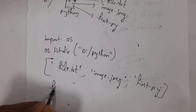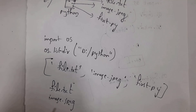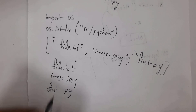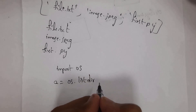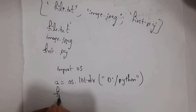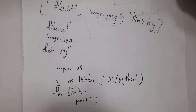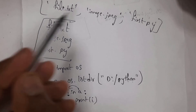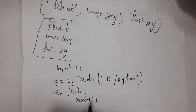If you don't want the output as a list and instead want each file printed on a separate line, write: 'import os', then 'a = os.listdir("D:\\python")', then use a for loop: 'for i in a: print(i)'. This will print 'file.txt' on the first line, 'image.jpeg' on the next, and 'first.py' on the next line, because print by default adds a newline character.